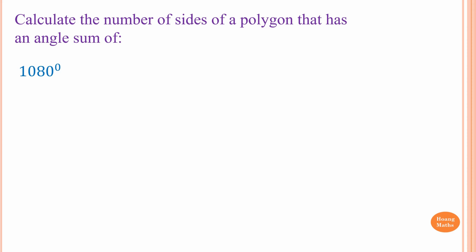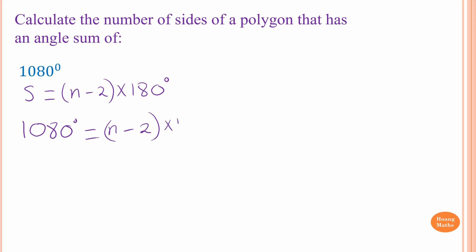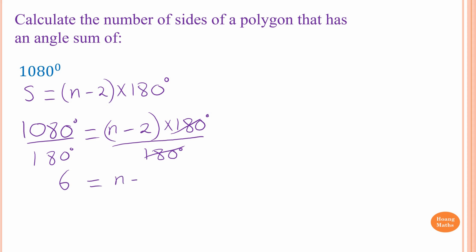Next problem: we know that S = (n − 2) × 180 degrees and S = 1080 degrees. So 1080 = (n − 2) × 180. Dividing both sides by 180 gives 6 = n − 2. Moving the 2 across gives n = 6 + 2 = 8. Therefore n equals 8.